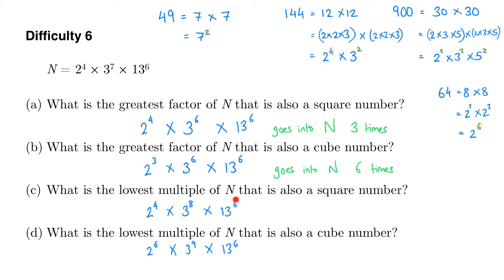Looking at our answer to Part C, this is a multiple of n, so let's think about how many lots of n it actually is. n is 2 to the power of 4 times 3 to the power of 7 times 13 to the power of 6. The only difference is that Part C has 3 to the power of 8 in it. So what we've really done is taken 3 lots of n to get to a position where we've got all even indices. This number is actually 3 times n.